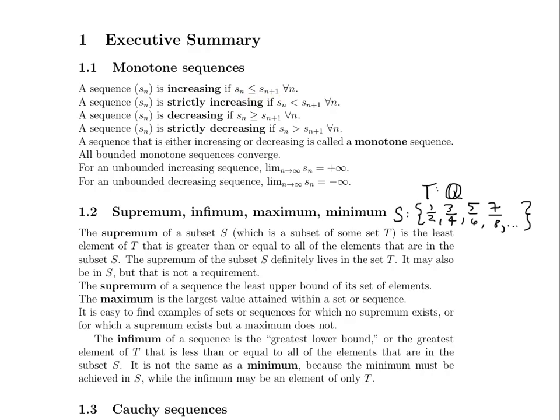Similarly, the infimum of a sequence is the greatest lower bound — the greatest element of T that is less than or equal to all of the elements in S. It may not be a member of S; it may only be a member of T. Note that the infimum is not the same as a minimum, much in the way that supremum and maximum are not the same. A minimum must be achieved in S, whereas an infimum does not have to be achieved at all. The infimum is the greatest lower bound; the minimum is the actually achieved least element of your subset.